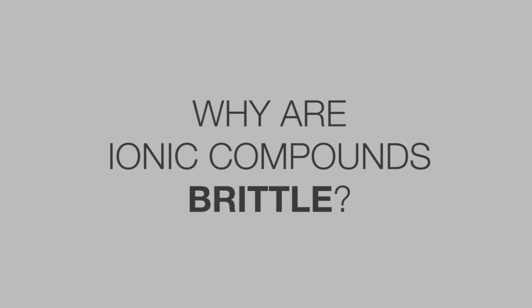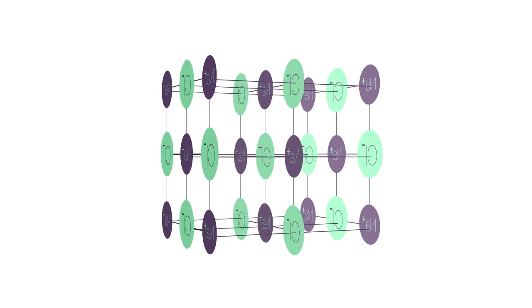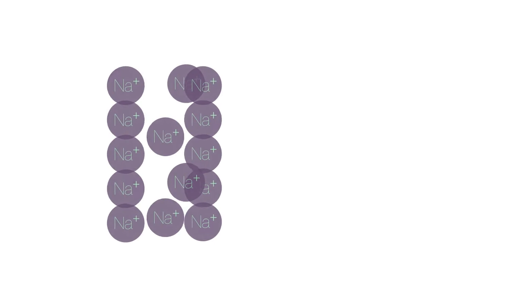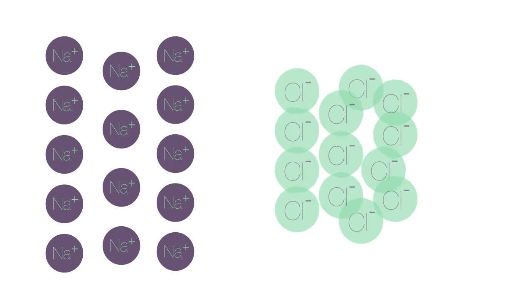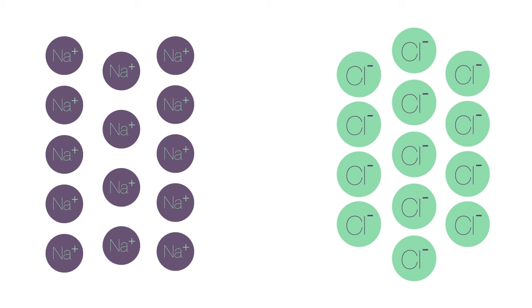But why are ionic compounds brittle? When a force is applied to the 3D lattice structure, it will disrupt the regular repeating pattern of sodium and chloride ions. The sodium ions are forced to be next to other sodium ions, and the same is seen with chloride ions. Like charges repel one another, and this repulsion essentially breaks the lattice structure.